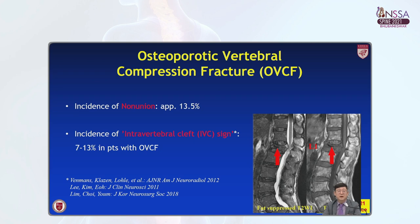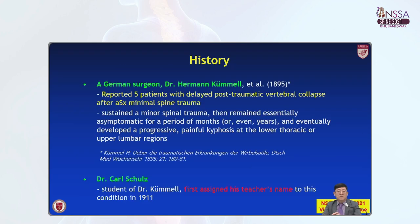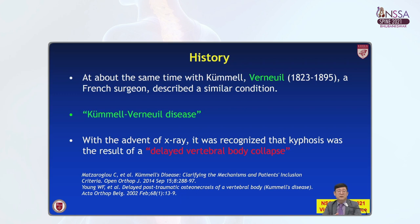This is a very typical case of intravertebral cleft sign on MRI. In 1895, German surgeon Dr. Hermann Kummel reported five patients with delayed post-traumatic vertebral collapse after asymptomatic minimal spine trauma. In 1911, one of his students, Dr. Karl Schulz, assigned his teacher's name to this condition. Around the same time, a French surgeon, Bernoulli, described a similar condition, so sometimes this disease is known as Kummel-Bernoulli disease.